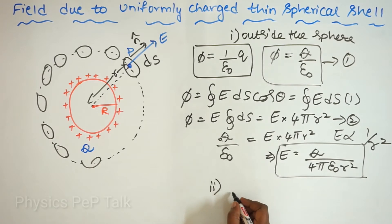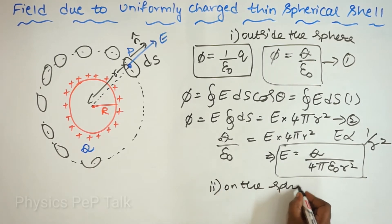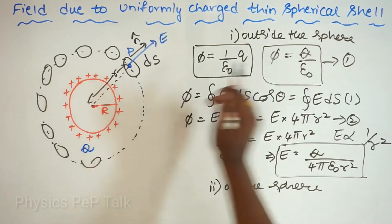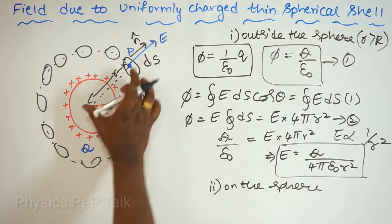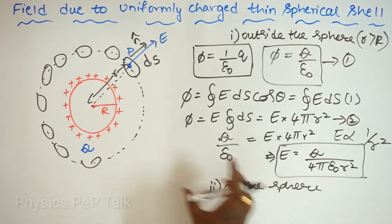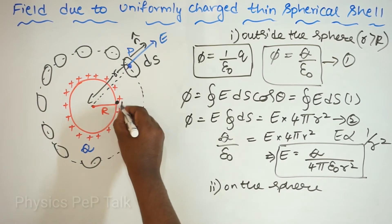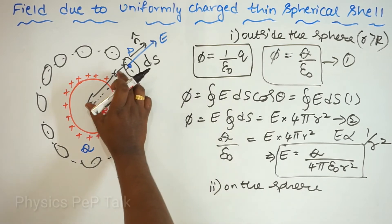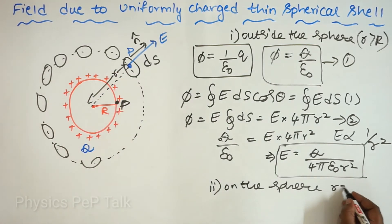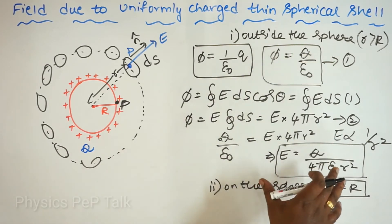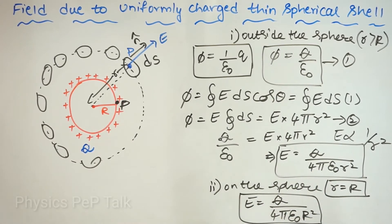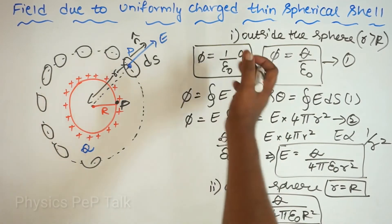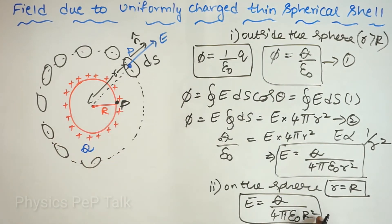Now I will consider the second case: point P on the surface of the sphere. In the first case, small r was greater than capital R. In the second case, I will place point P on the surface itself, so small r equals capital R. Therefore, the electric field becomes E = Q / (4 pi epsilon naught R squared), where R is the radius of the sphere.